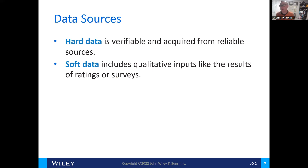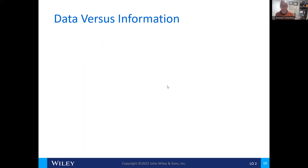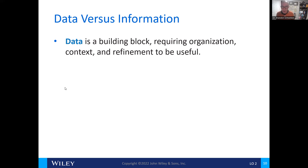Other examples of soft data would include interviews of decision makers. So what's the difference between data and information? Data is the building block that requires organization, context, and refinement in order to be useful. We take the raw data, put it into Excel or Power BI, and analyze it by organizing it in a meaningful way, drawing inferences from it.